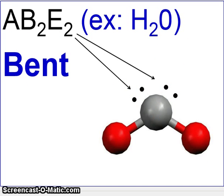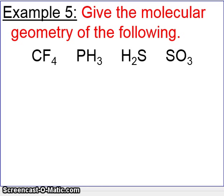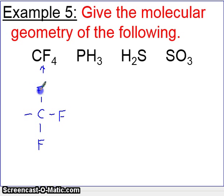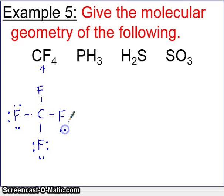Now let's try a few of these and name the molecular geometries. The first thing we'll do is draw the structure. The CF₄ molecule will look like this — a carbon in the middle with four fluorines on the outside. You count the valence electrons and distribute them, and you'll see that each fluorine will have a full octet, and the carbon in the middle will have an octet as required by the octet rule.